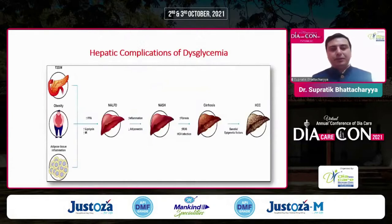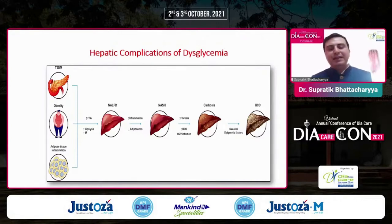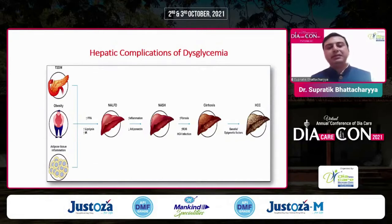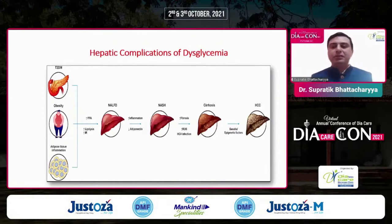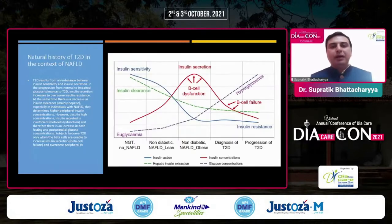If you look at diabetes and obesity, dysfunctional adipose tissue or inflammation in the adipose tissue leads to increased free fatty acids, increased lipolysis, and increased insulin resistance, which leads on to NAFLD. If that progresses, the inflammation continues and there's a decrease in the levels of adiponectin, leading to NASH, followed by increased fibrosis, increase in reactive oxygen species, and maybe an insult like HCV infection that leads to cirrhosis.